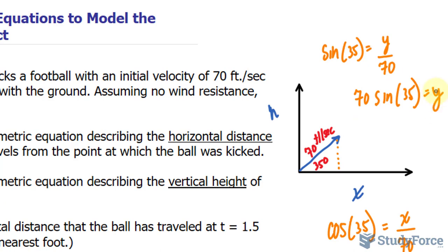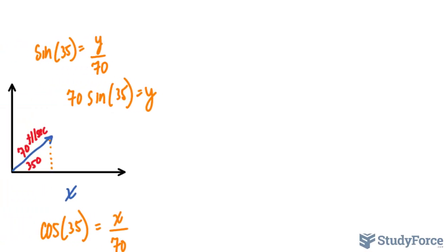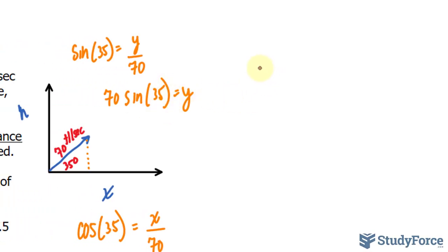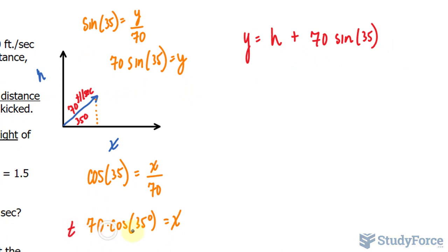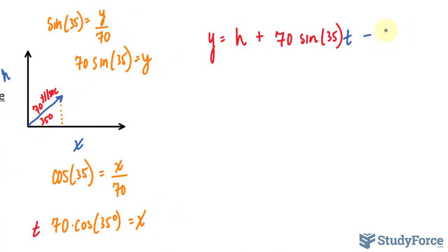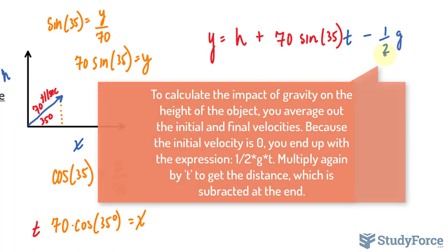There are two other things to consider. For our formula, we write y equals initial height, which for us is zero but you always want to write it down, plus 70 sine 35 multiplied by t, minus we have to consider gravity. Gravity is pulling the ball down, so minus half the gravity, 1 over 2 times g for gravity. Gravity is constant, approximately 32 feet per second squared.